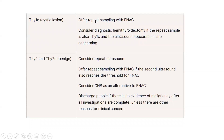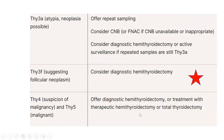For Thy1C (cystic lesion), offer repeat sampling with FNAC. Consider diagnostic hemithyroidectomy if repeat sample is also Thy1C and ultrasound appearances are concerning. For Thy2 and Thy2C, consider repeat ultrasound and offer repeat sampling with FNAC if the second ultrasound also reaches the threshold. Consider core needle biopsy as an alternative. Discharge if there is no evidence of malignancy after all investigations. For Thy3A, offer repeat sampling with core needle biopsy. Consider diagnostic hemithyroidectomy or active surveillance if repeated samples are still Thy3A.